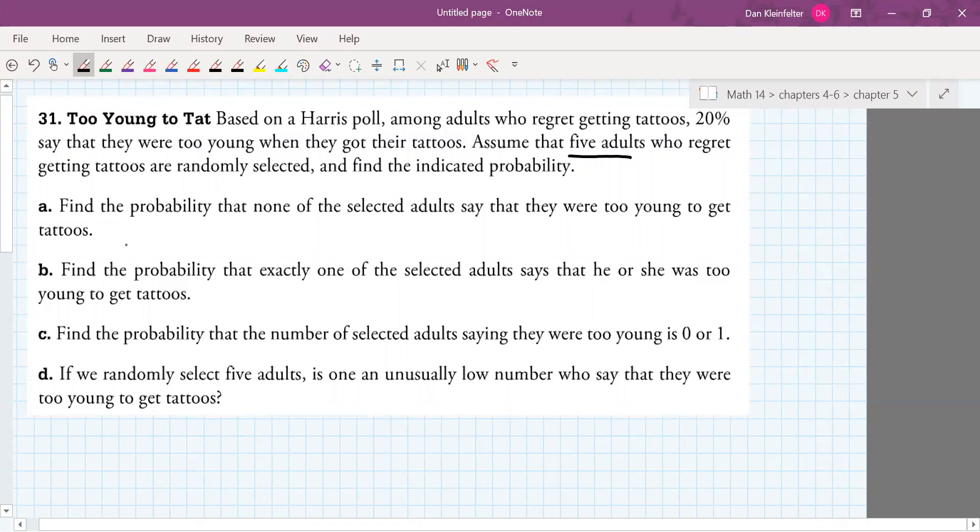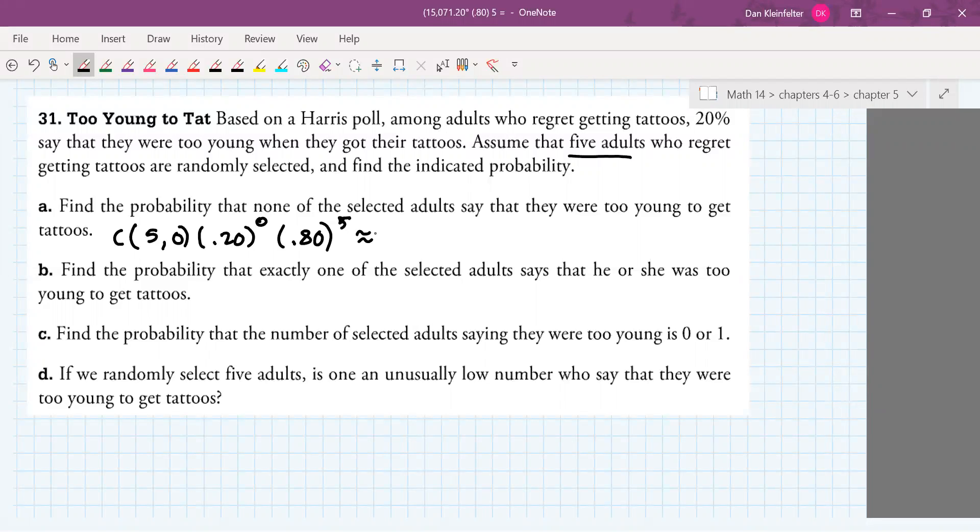So none of the adults out of five, so out of five adults who regret getting tattoos, will say none say they were too young. 20% of the people say they were too young. So that will occur with probability 0.20. We need that to occur no times. If 20% say they were too young, then 80% don't say they were too young. That will have to be all five. Let's go ahead and calculate that. That works out to be about .32768.